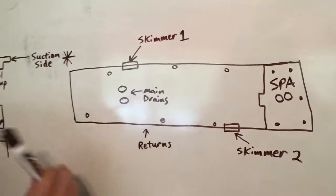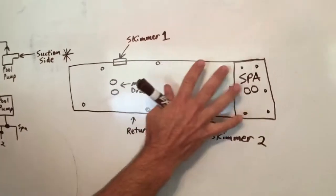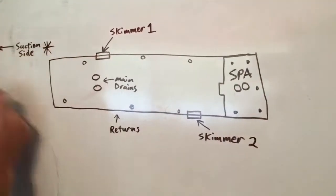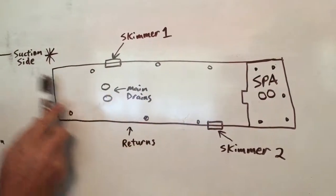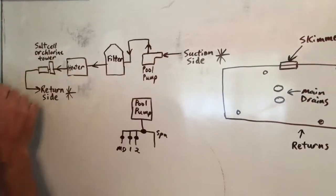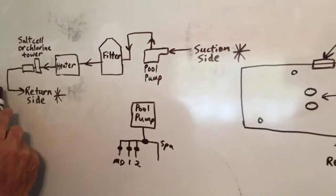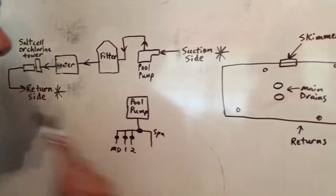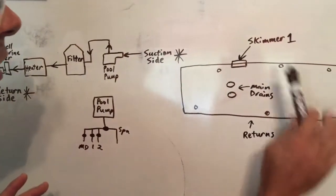So that's the flow of the water. It comes in to the pump from the skimmers and the main drain. Then it goes through this section. It goes through these different pieces of equipment. And then here's the return side. It's shooting it back over here to the pool.